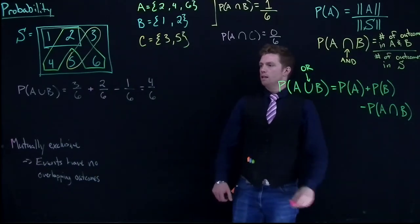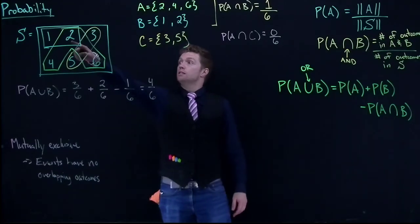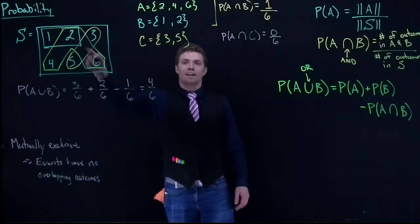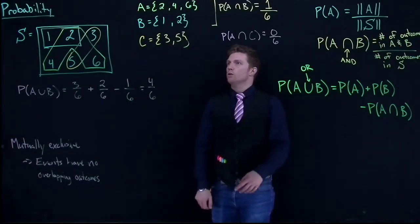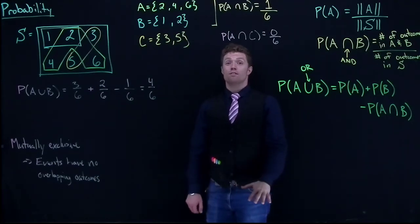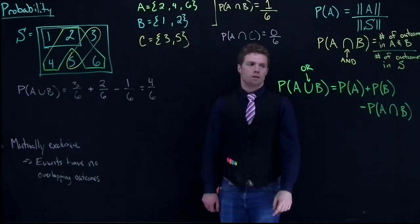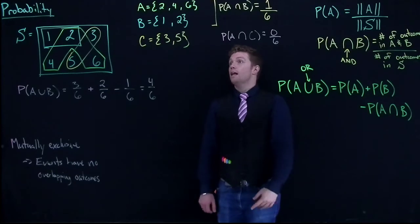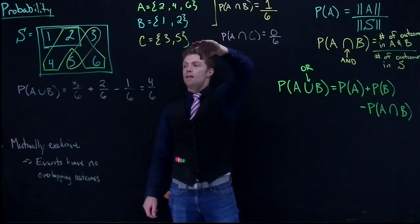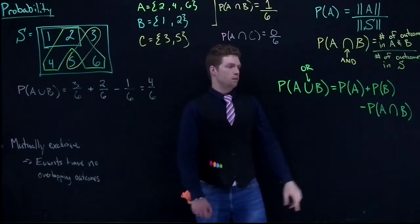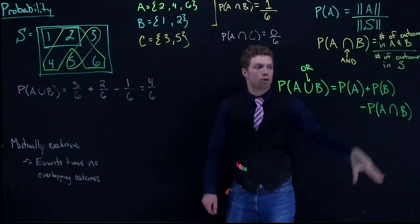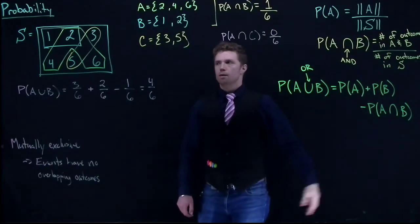Why did we subtract off that 1/6? We actually double-counted the number 2. The 3/6 from 2, 4, 6 and the 2/6 from 1 and 2 both accounted for the 2. Since we're only rolling this die once — asking what's the probability of rolling either an even or less than 3 — the total number of distinct outcomes is 4 out of 6. That's how we handle the union. If two events don't have any overlap, like B union C, when we subtract off the intersection there is none, so for mutually exclusive events the probability of their intersection is zero and it drops out, leaving just probability of B plus probability of C.